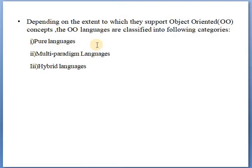Languages which support and also enforce all the object oriented concepts are called pure object oriented languages. In pure object oriented languages, everything from the character to punctuation mark to the modules is treated as an object. Smalltalk and Ruby are examples of pure object oriented languages. In pure languages, only object oriented concepts are used.